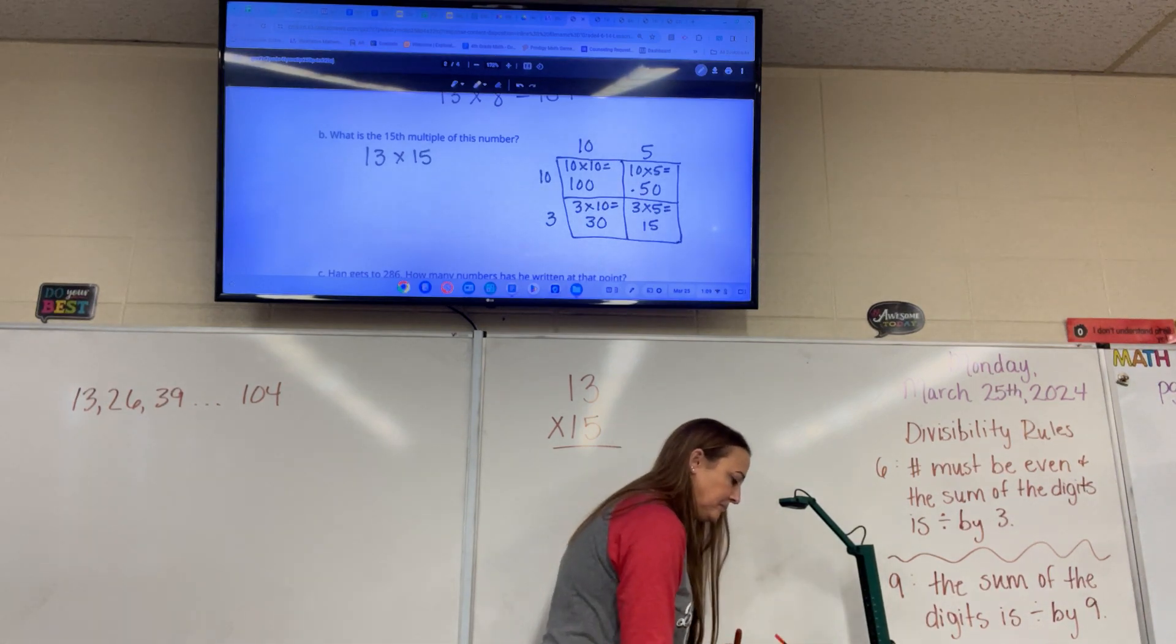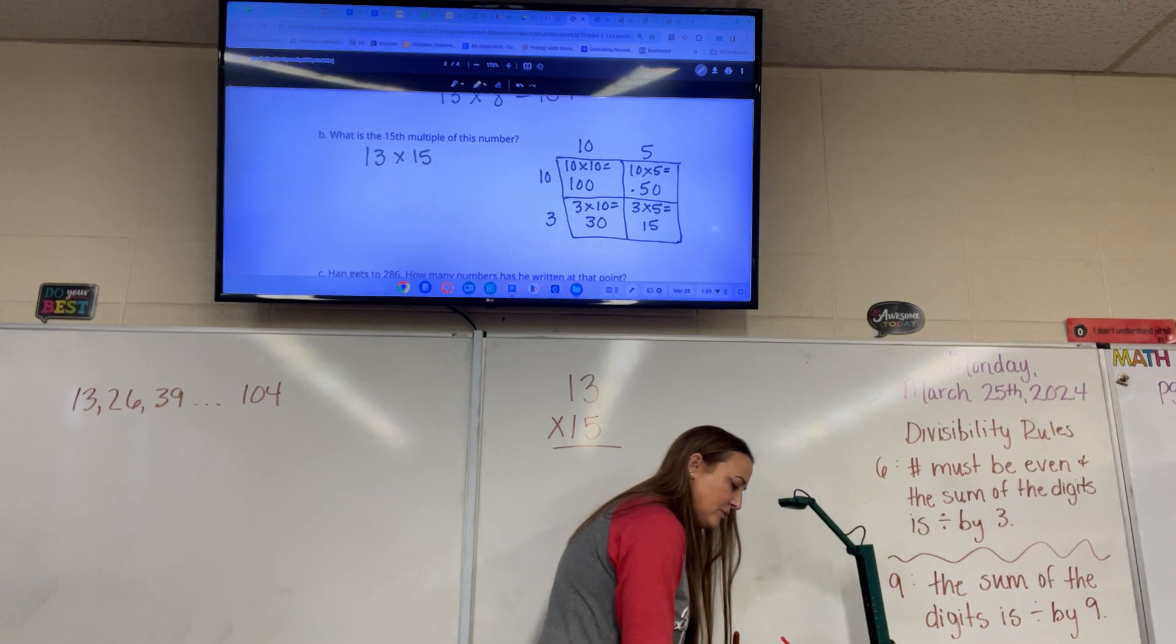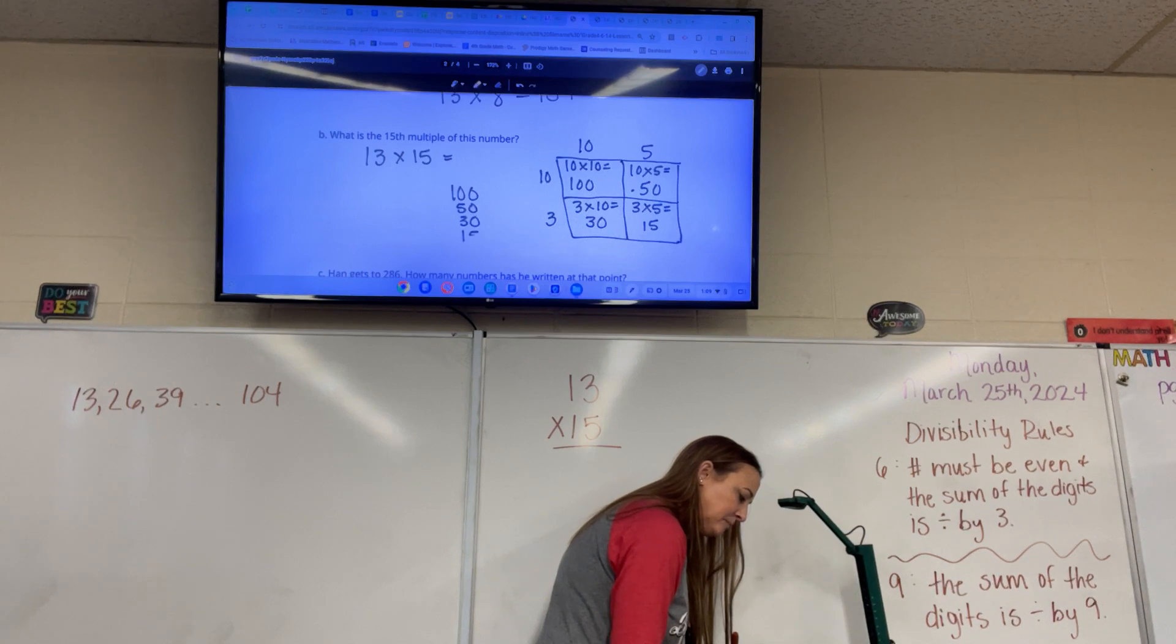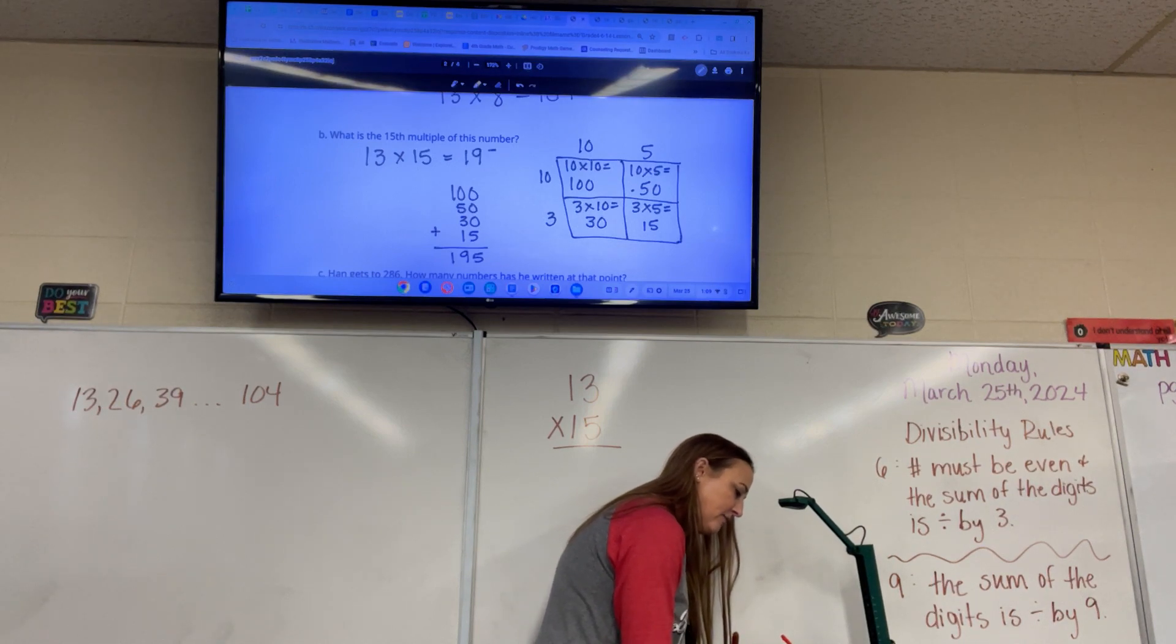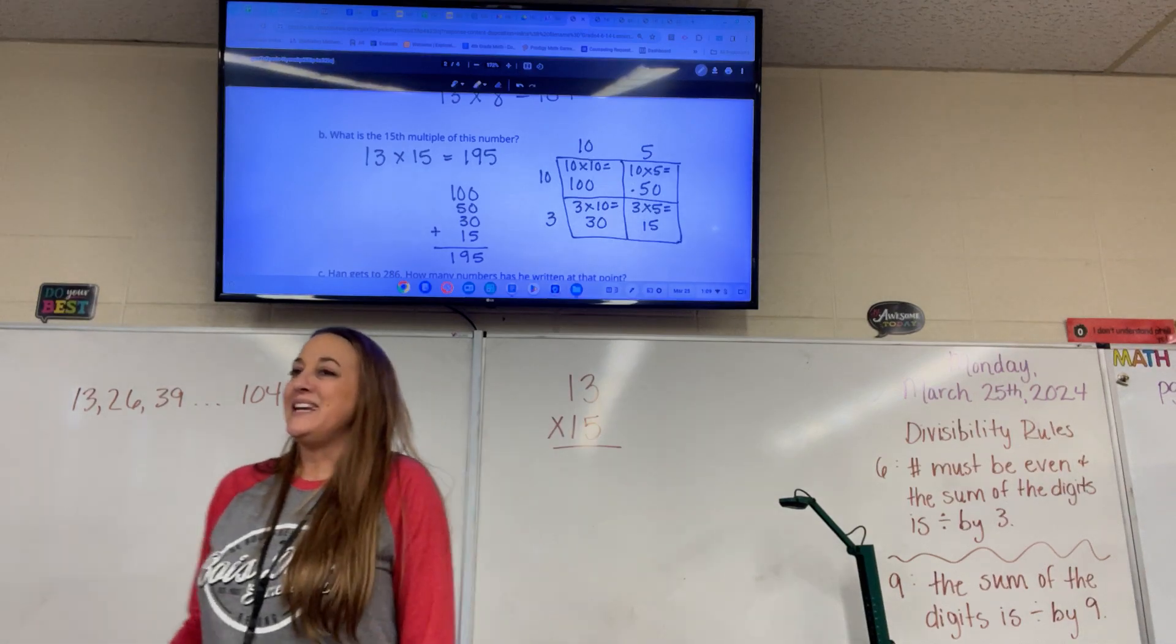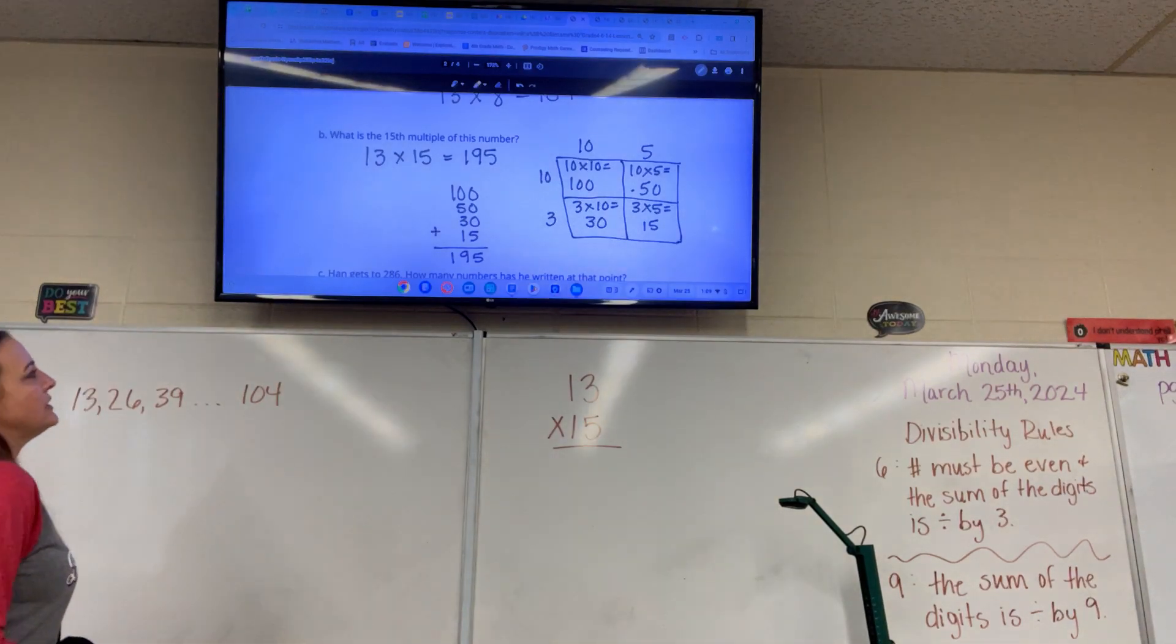And our last step? Stack them and add them. There you go. Stack them and add them. So we're going to stack up 100, 50, 30, and 15. And when we add all of those together, we will get 195. So the 15th multiple of 13 is 195.